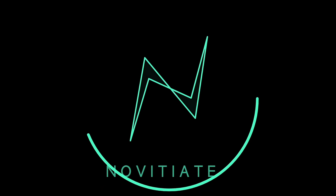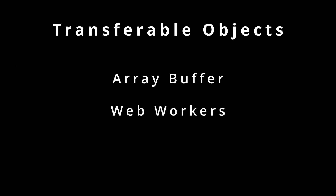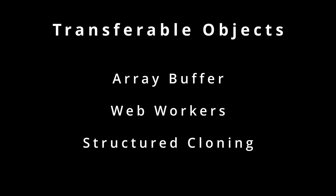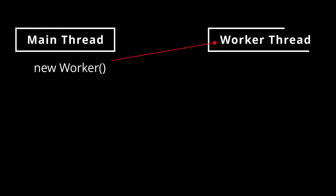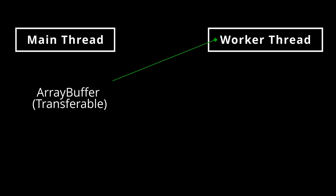In this video we'll be discussing transferable objects by looking at examples using ArrayBuffer, Web Workers, and structured cloning. Transferable objects are objects that can be transferred to different contexts. For example, when we create a Web Worker, a new Web Worker context is created inside the browser, and you cannot access resources of the main thread from the Web Worker and vice versa.